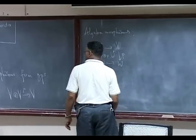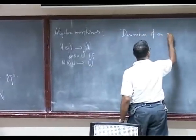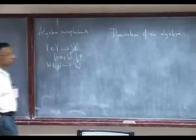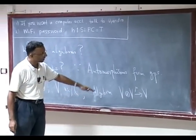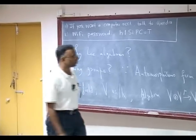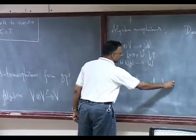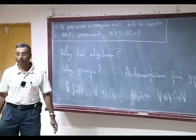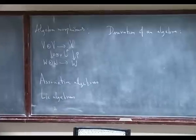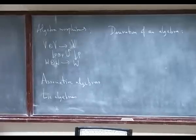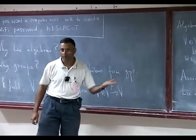Let me define the important notion of a derivation of an algebra. Before that, note that you can have various kinds of algebras: associative algebras, where the multiplication is associative, or Lie algebras. The definition of a Lie algebra should have been written down this morning, so I won't repeat it. A Lie algebra is an example of an algebra satisfying further axioms.